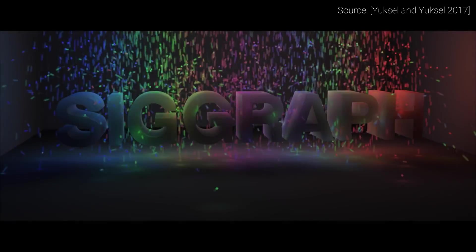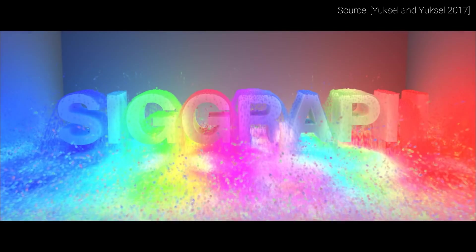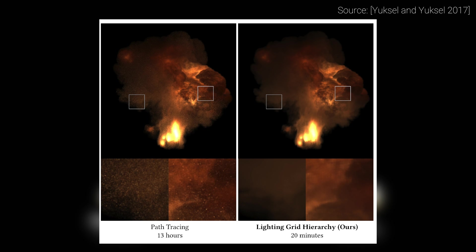A technique that can deal with this is called volumetric path tracing, and if we wish to create an image of an explosion using that, well, better pack some fast food because it is likely going to take several hours. The explosion in this image took 13 hours, and it is still not rendered perfectly. But this technique is able to solve this problem in 20 minutes, which is almost 40 times quicker. Unbelievable!